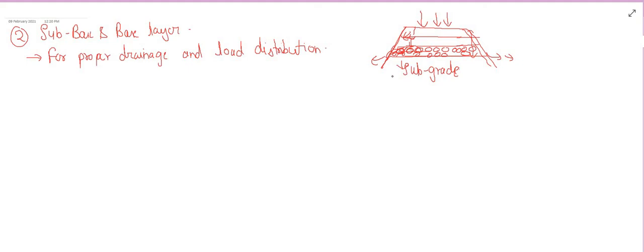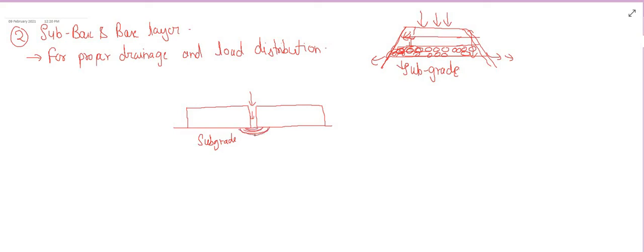The reason drainage is critical can be explained with an example. Suppose we have a rigid pavement with concrete slabs joined at the top surface, and no base or subbase course is provided, so water is not drained. Rainfall water will leak slowly through the joints down to the subgrade layer and start forming a slurry — a liquid paste — because the soil layer is fine-grained material mixed with water.